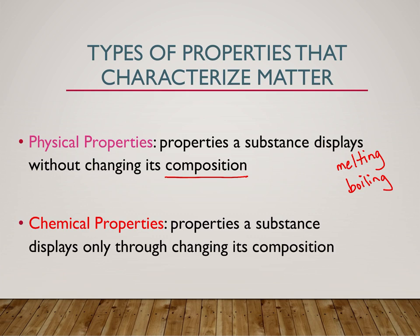Chemical properties are properties a substance displays only through changing its composition, and this usually has to do with reactivity. How does it react with different things? Does it react with water or does it not? Does it act as a base or does it act as an acid? Those are chemical properties — things you would see in reactions, whereas physical properties are things you can learn about your substance without changing the composition.